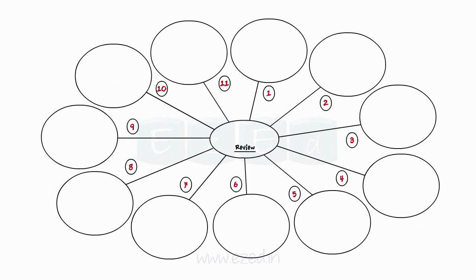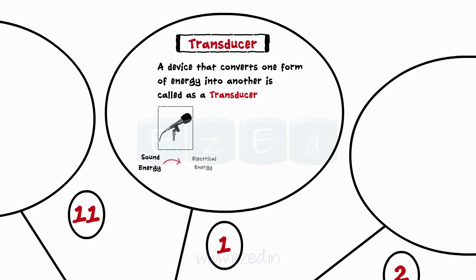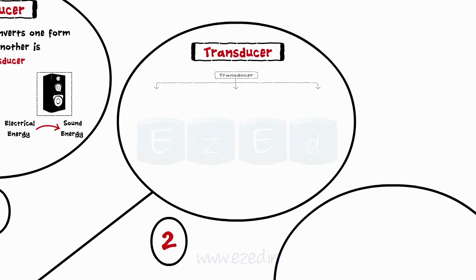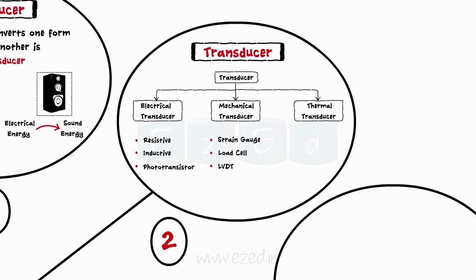Let's have a quick review of what we have learnt. A device that converts one form of energy into another is called a transducer. Microphone and speaker are two examples. We learnt three types of transducers: electrical, mechanical and thermal. Resistive transducer, inductive transducer and phototransistor are electrical transducers. Strain gauge, load cell and LVDT are mechanical transducers. Thermocouple, RTD and thermistor are temperature transducers.